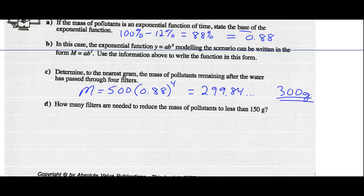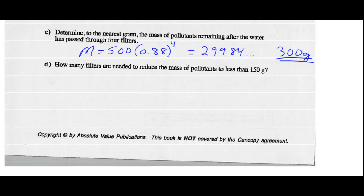How many filters are needed to reduce the mass of pollutants to less than 150 grams? The final mass should now be 150, the initial mass was 500, we're still keeping 88% every time we go through a filter, but figure out what t is now. This is the question we're trying to solve algebraically. Step one, divide both sides by 500. 150 divided by 500 is 0.3, and that equals 0.88 to the exponent t.